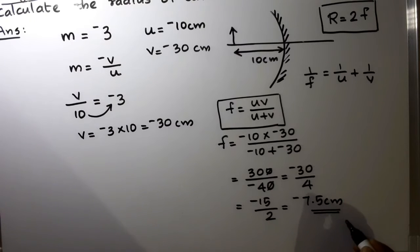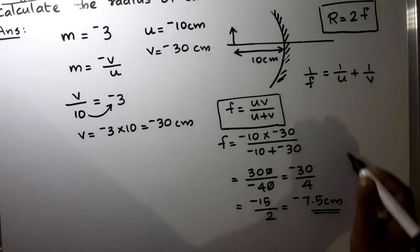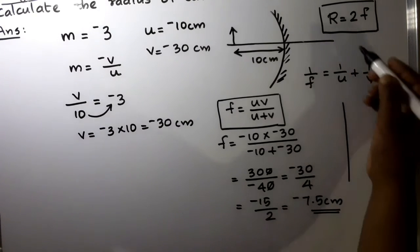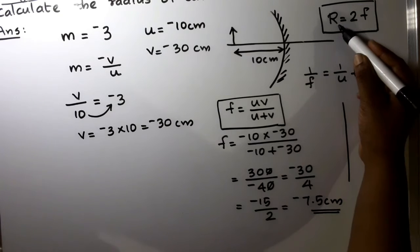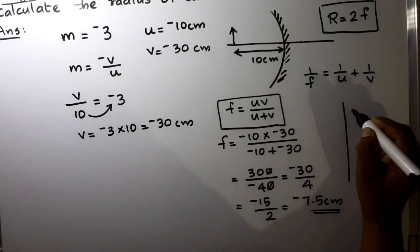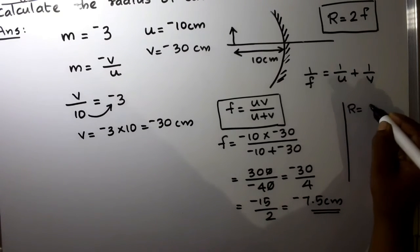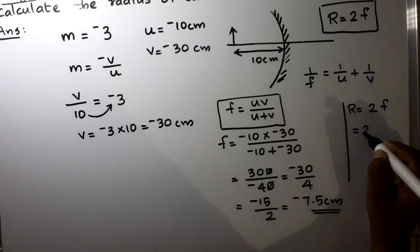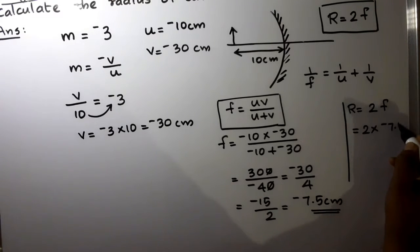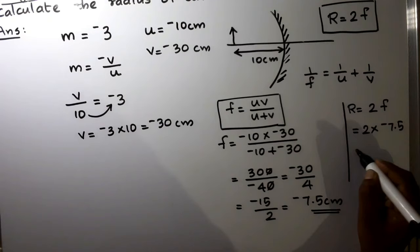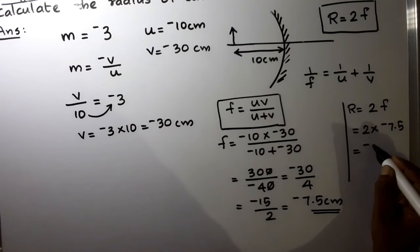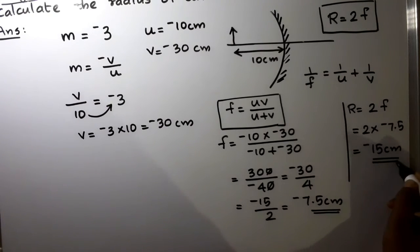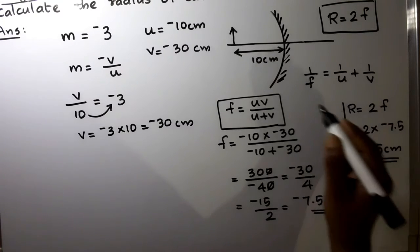We got the focal length. Now we find the radius of curvature. R = 2f = 2 into minus 7.5 = minus 15 centimeters. That is the radius of curvature of this mirror.